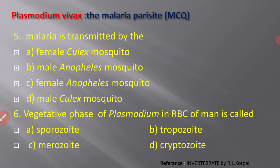Next MCQ: malaria is transmitted by A) female Culex mosquito, B) male Anopheles mosquito, C) female Anopheles mosquito, D) male Culex mosquito. This is straightforward — malaria is transmitted by the female Anopheles mosquito.